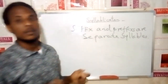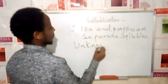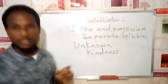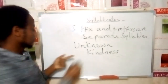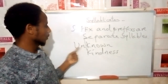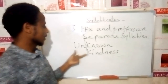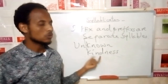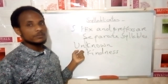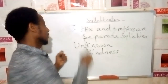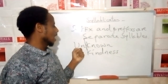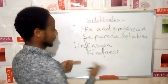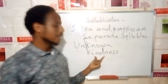Suffixes and prefixes are separate syllables. For example, 'unknown': there are two vowel sounds, U and O. The prefix 'un' is syllabified separately, giving us un-known. Another example: 'kindness.' The suffix '-ness' is a separate syllable, giving us kind-ness.